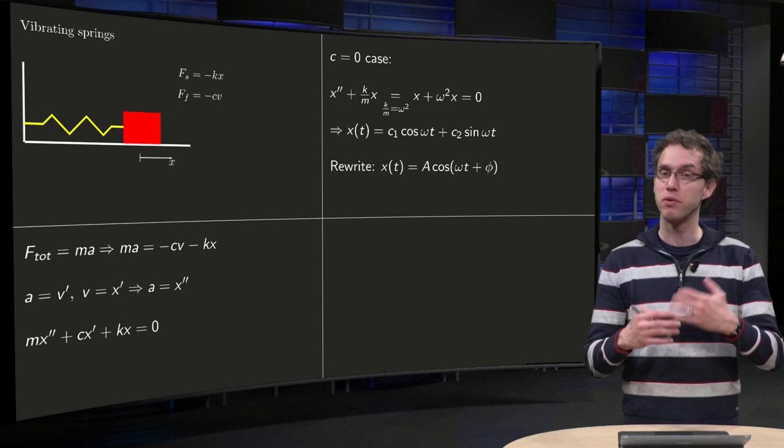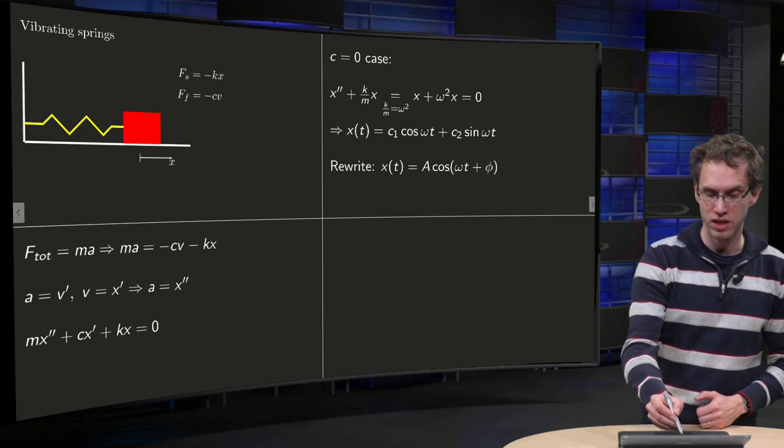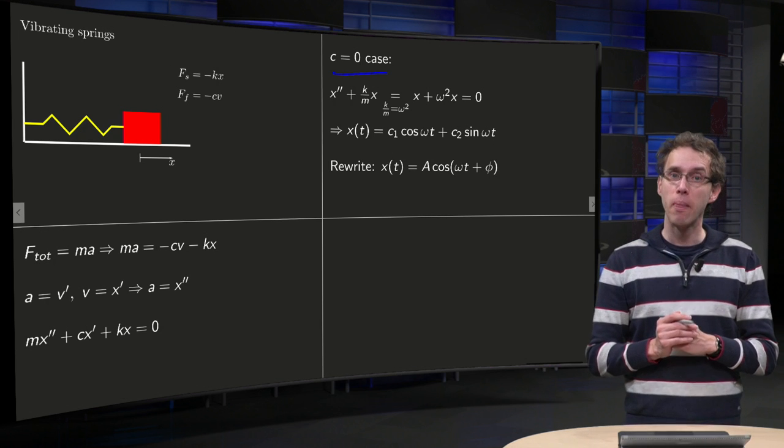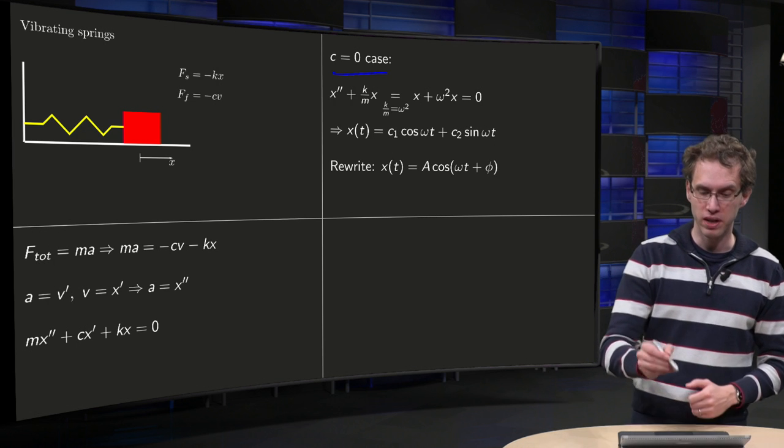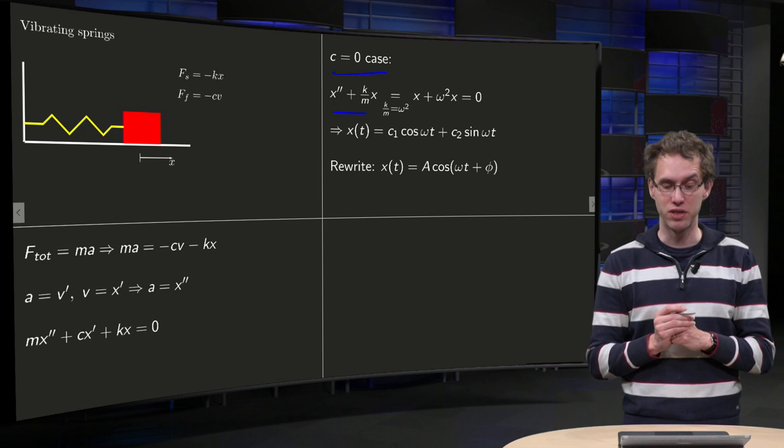So what happens, for example, if we solve it without friction, so the c equals zero case? Well, in that case, we get x double prime plus k over m times x equals zero.